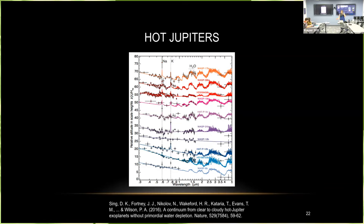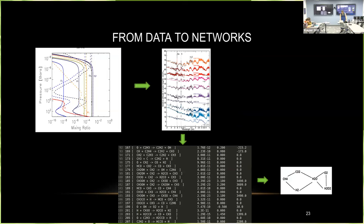Hot Jupiters are completely inhospitable to life, but they're simple — only a couple of drivers for their thermochemical activity: initial composition, temperature, and what pressure you're sampling the atmosphere from. As a bonus, the conditions on hot Jupiters in terms of gas mix, temperature, and pressure are actually pretty similar to what you find in internal combustion engines, so there's a wealth of chemical kinetics data from car companies we can use in our models. We modeled a population of hot Jupiters with varying initial compositions and temperatures, extracted thermochemically favorable reactions, and built networks weighted by flux.